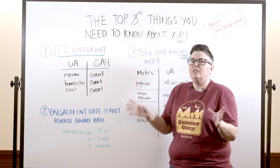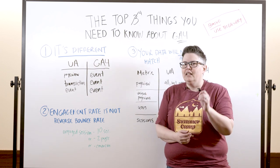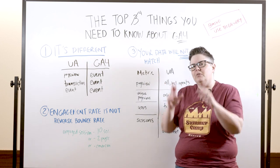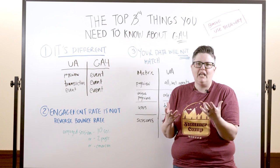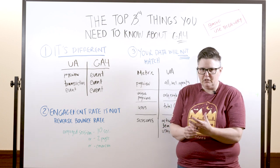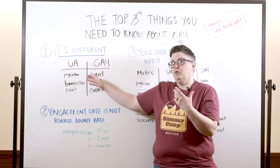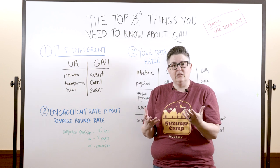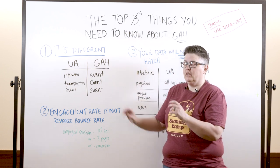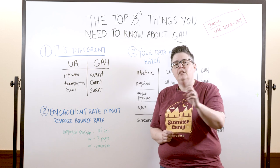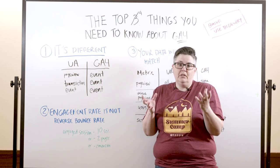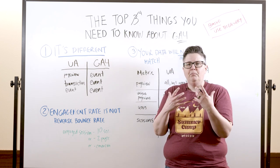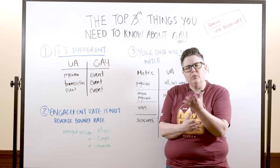So the first thing: it's different. In Universal Analytics, there were different types of hits — page views, transactions, events — those are all different types of hits. In GA4, everything is an event. There is a page view event, a transaction event, and, well, an event event. You name the events whatever you want. And because of that, it's actually a much better way to report on your data.